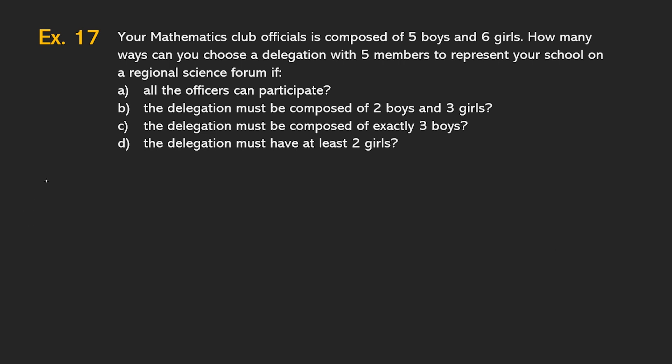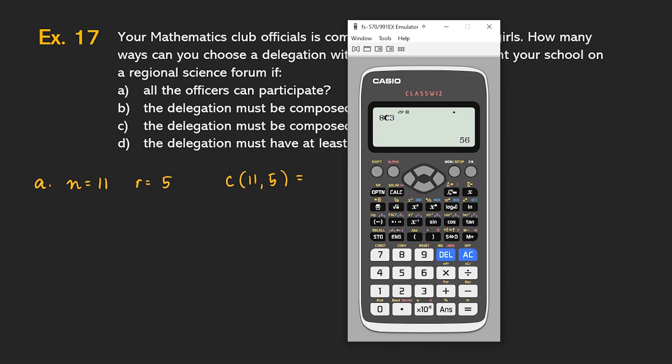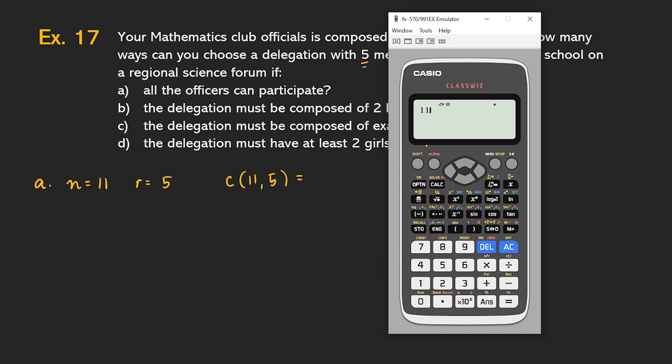Okay. Let's have letter A muna. All the officers can participate. There are eleven. There are eleven students because five boys, six girls, and then we have to choose five. So, your R here is five. So, for letter A, it's just a combination of eleven objects taken five at a time, which you can do in how many ways? Let's use our calculator. That's eleven combination five, which is 462.